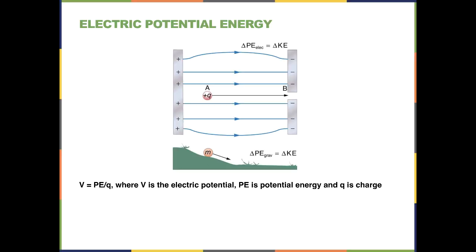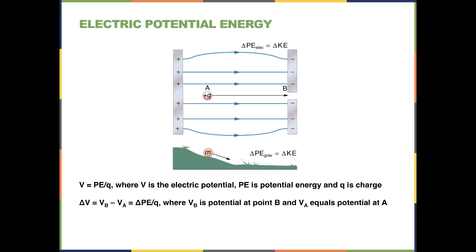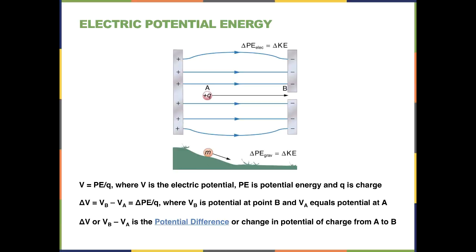When that potential energy changes, it's converted to another form, which is represented with the W in this diagram. So V is equal to the potential energy divided by the charge, where V is the electrical potential, PE is the potential energy, and Q is the charge. A change in V, or delta V, is the difference in electrical potential at point B minus the electrical potential at point A, and that is equal to the change in potential energy divided by the charge.